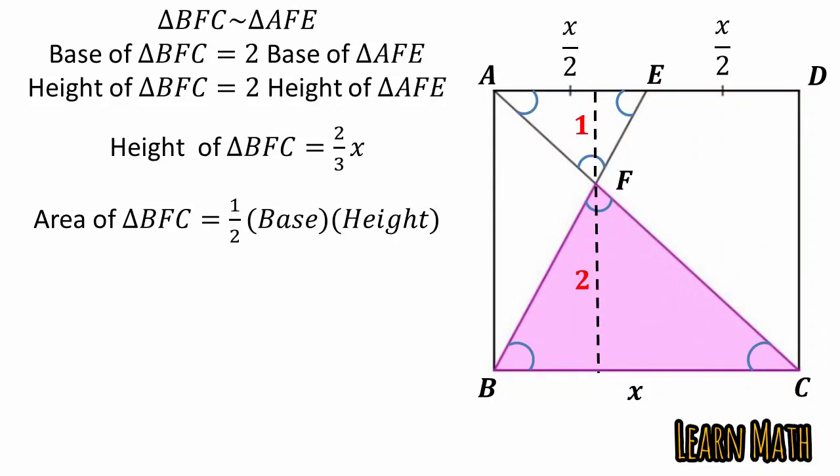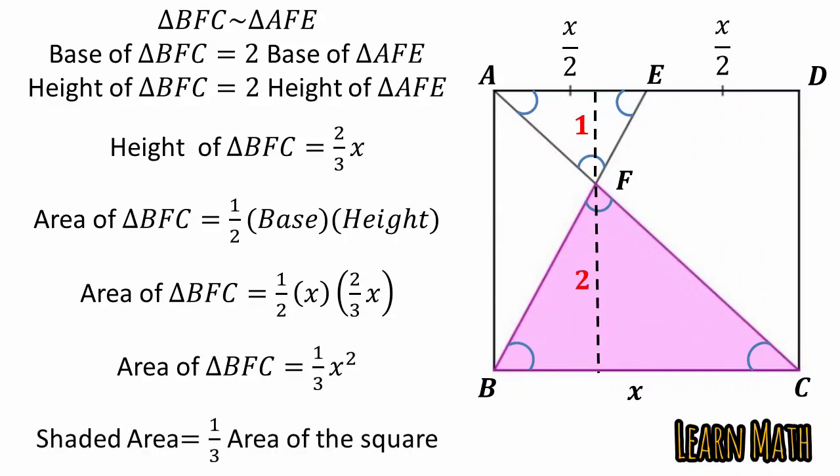Putting the values in this formula we will get this. Now two will be cancelled with two and we will get one by three of x square. So the shaded area is equal to one by three of area of the square.